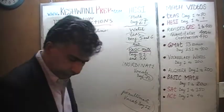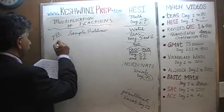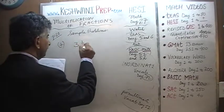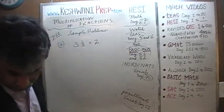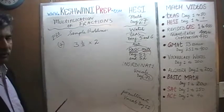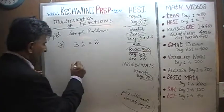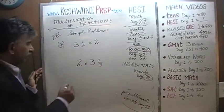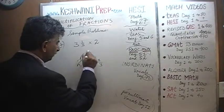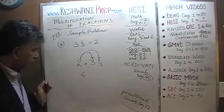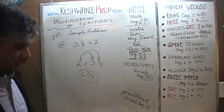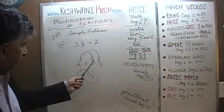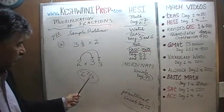Number 7: we have to multiply 3 and 1 third by 2. We are asked to multiply two numbers, one of which is a whole number — let's put the whole number first. 2 times 3 is 6, and 2 times one third is just 2 thirds. The answer is 6 and 2 thirds. You don't have to do any business of converting to an improper fraction — just multiply it out.